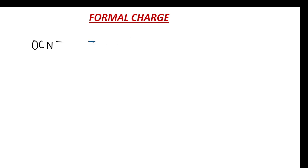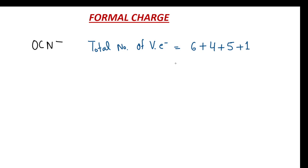One of which is more stable than the other — you can use formal charge to figure out which one is the most stable. First of all, we will calculate the total number of valence electrons for OCN⁻. The total number of valence electrons equals 6 (oxygen) plus 4 (carbon) plus 5 (nitrogen), and for this negative charge we add plus 1, giving us 16 electrons.